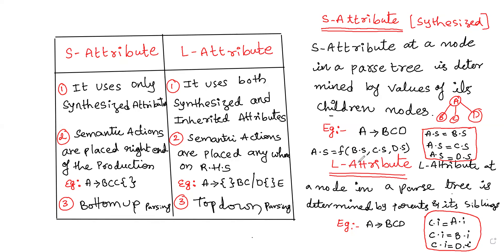Now let us move on to L-Attribute. An L-Attribute at a node in a parse tree is determined by its parent or its siblings. The node is determined by its parent value. For example, if you want to find the value of C, C inherits from A because A is its parent. So C.I is equal to A.I. Also, it depends on its siblings — siblings means B and D are siblings of C. Before C we have B, and after C we have D — both are siblings.